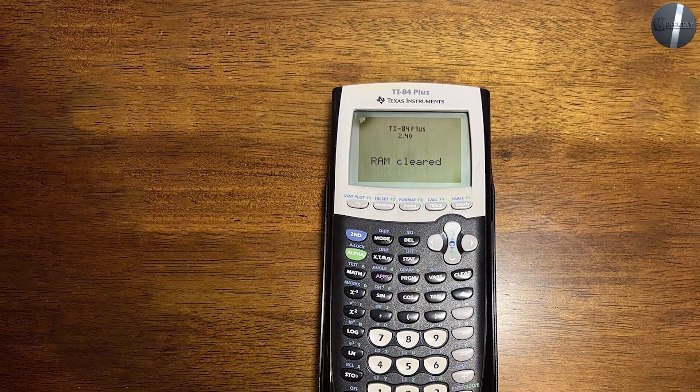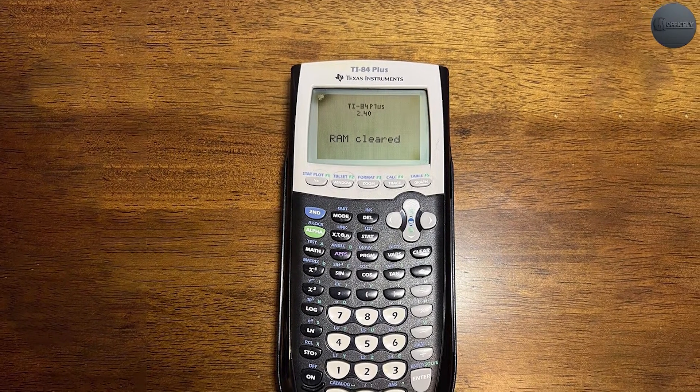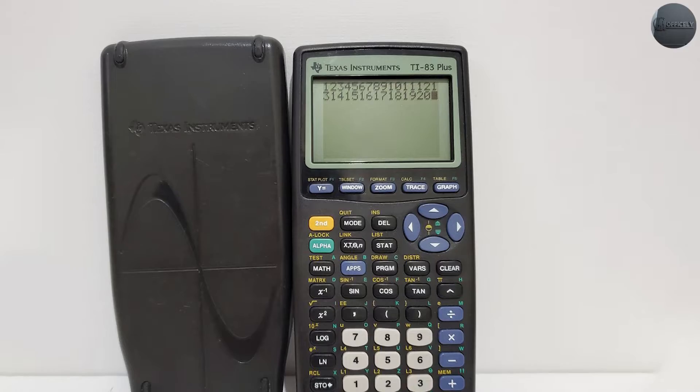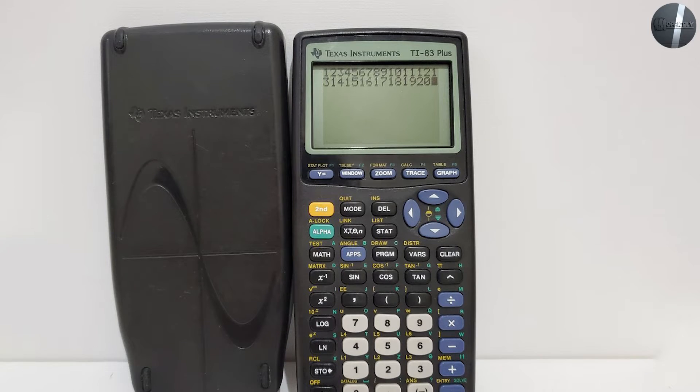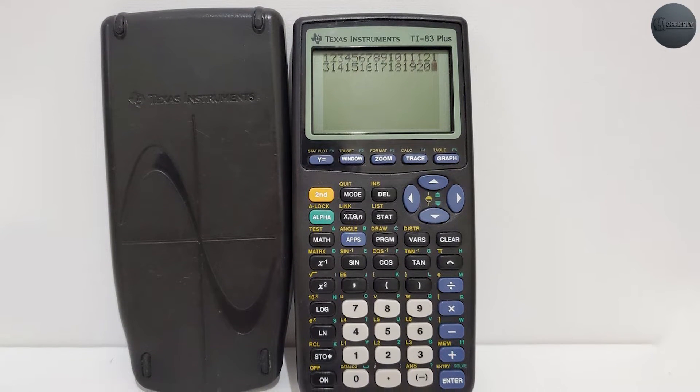And finally, the main difference is computing power. The TI-83 Plus has about a 6 megahertz processor, while the TI-84 Plus has about a 15 megahertz. In the real world, this makes the TI-84 Plus about twice as fast as the TI-83 Plus.